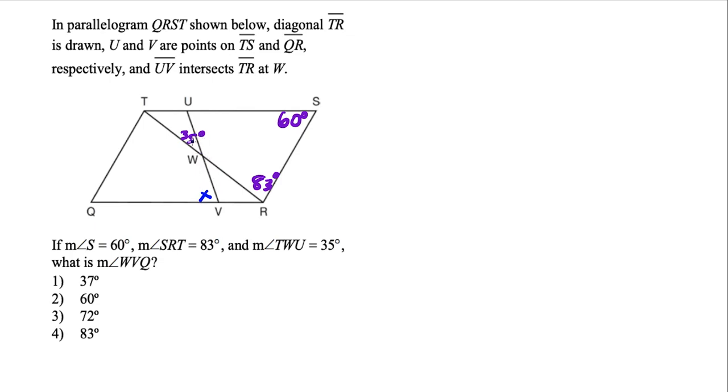So there's a few ways we could go forward with this, but this is a parallelogram. So we know that these opposite sides are going to be parallel. So now we just think about what information can we figure out here. Well, we know that vertical angles are congruent. So this angle here, VWR, we could also label as 35 degrees.